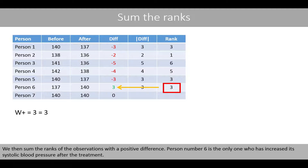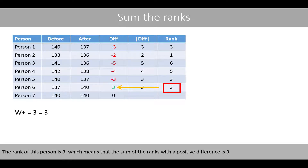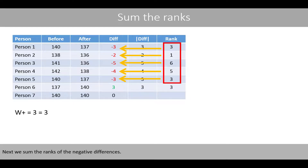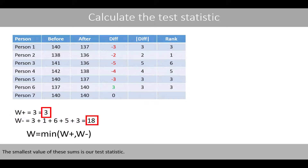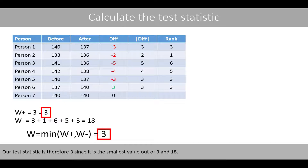We then sum the ranks of the observations with a positive difference. Person number 6 is the only one who increased the systolic blood pressure after treatment; their rank is 3, so the sum of positive ranks is 3. The sum of the negative ranks is 18. The test statistic W is the smallest of these two sums, which is 3.